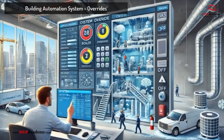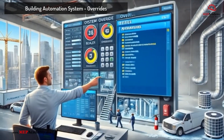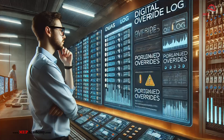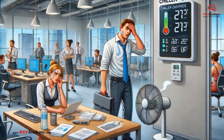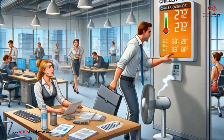Building automation systems, BAS, are designed to automate and optimize the operation of heating, ventilation, air conditioning, HVAC, lighting, and other critical building functions.